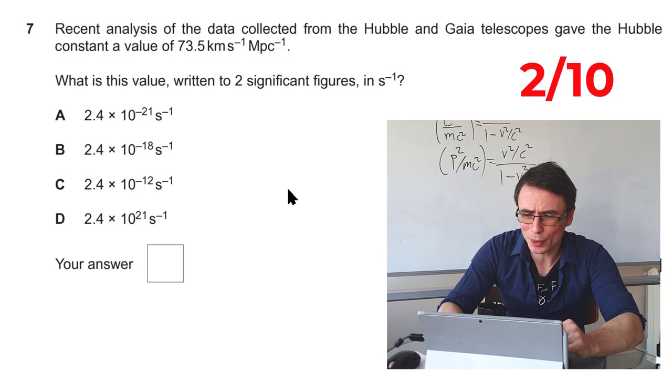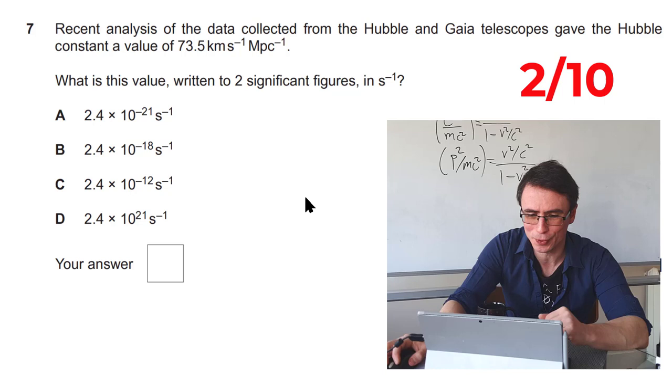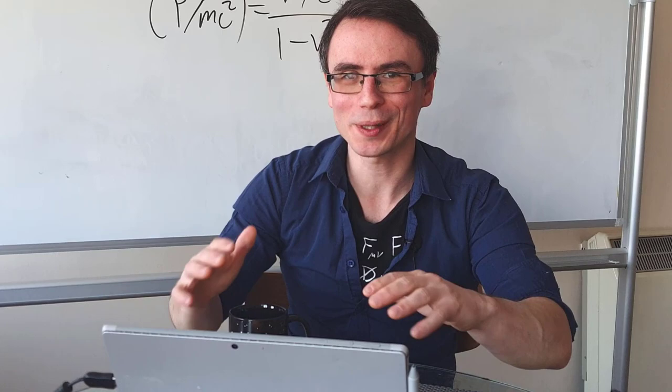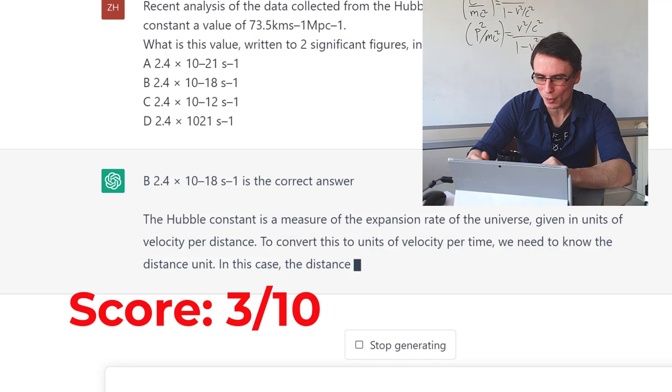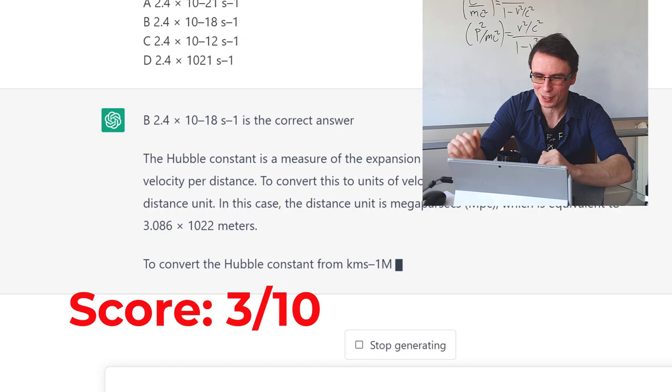Next one. This one is all about converting Hubble's constant to SI units written to two significant figures. Let's see how it does. Oh, it's taking its time on this one. Once again, it is correct. It seemed to do pretty well on purely mathematical questions, but not so much on estimates or where there might be some ambiguity and actual words given in the question.